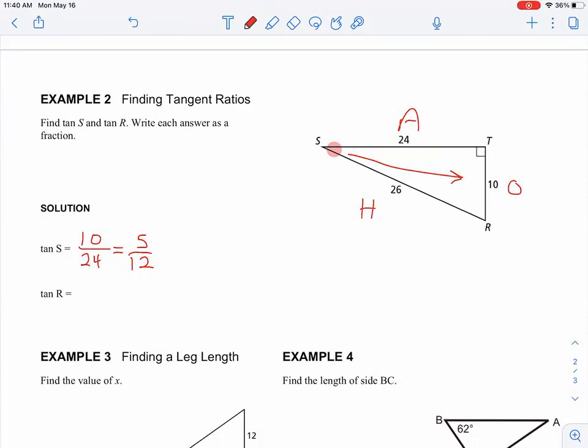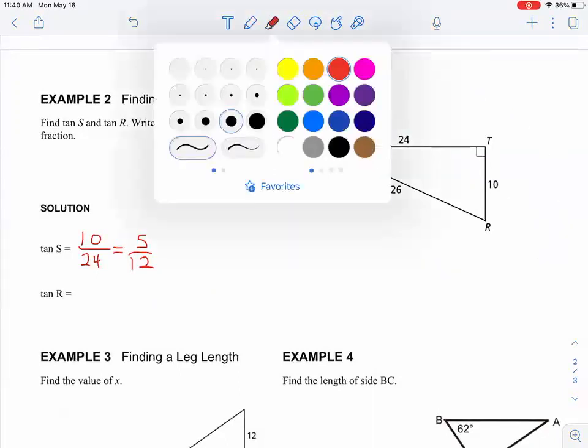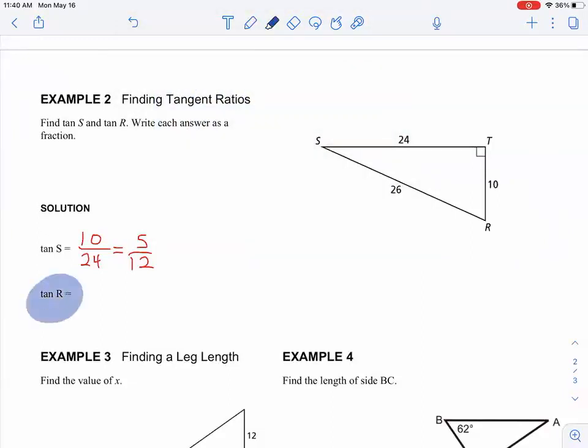Again, the tangent of S. So I put my marker on S. My opposite side was 10. My adjacent was 24. And so I did 10 over 24 and reduced that. So now I'm going to change colors. So I'm going to get rid of this stuff here. And I'm going to change colors to blue. Because now I want to find the tangent of R. In fact, I want you guys to find the tangent of R. So please take a minute to do that. So you're writing the tangent of R.